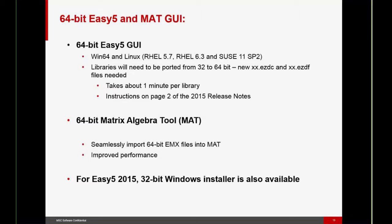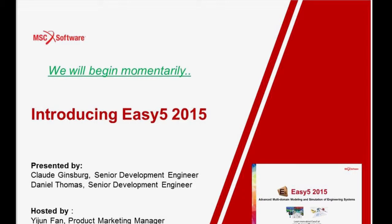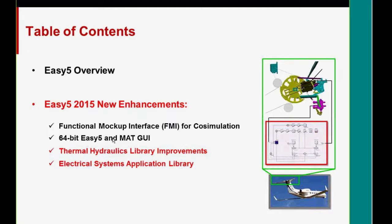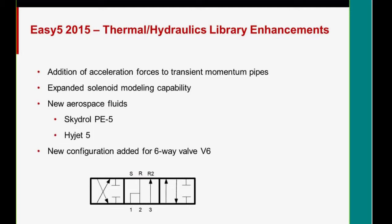For EZ5 2015, there is still a 32-bit Windows installer available if you need to use that. But we encourage everyone to migrate to 64-bit installers and installations as soon as they can. And with that, I am finished, and Claude will take over. I'll talk briefly just about some improvements that were made to the thermal hydraulics library, and then I'll talk about the new electric systems library.